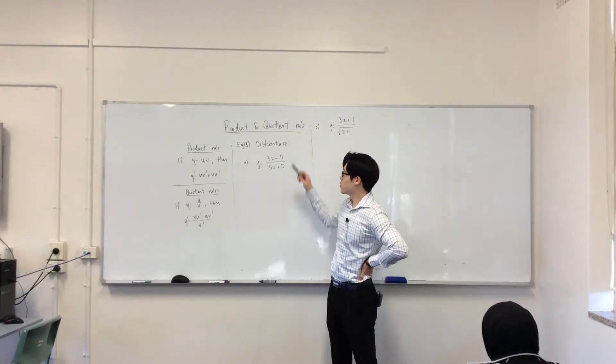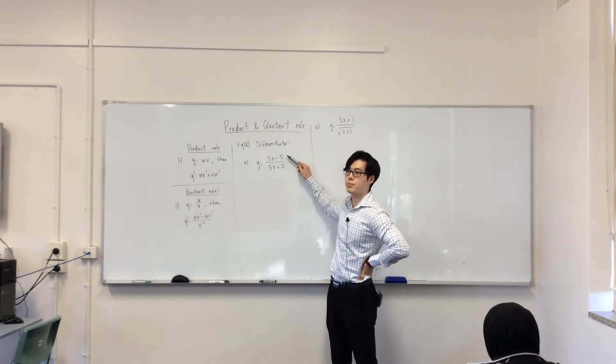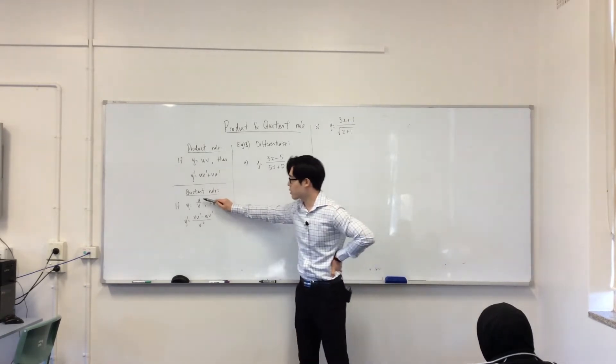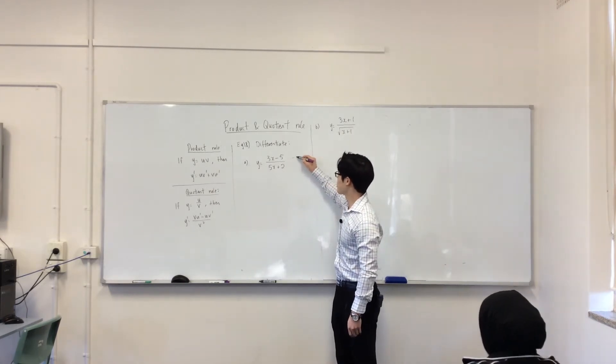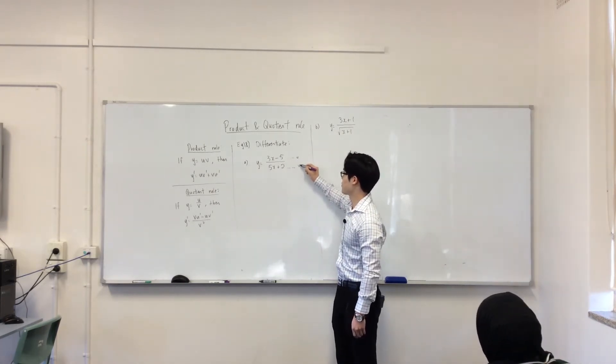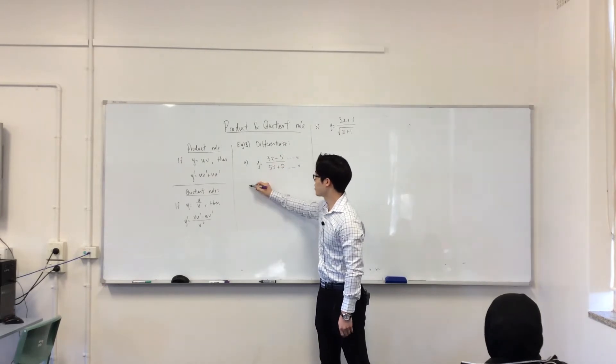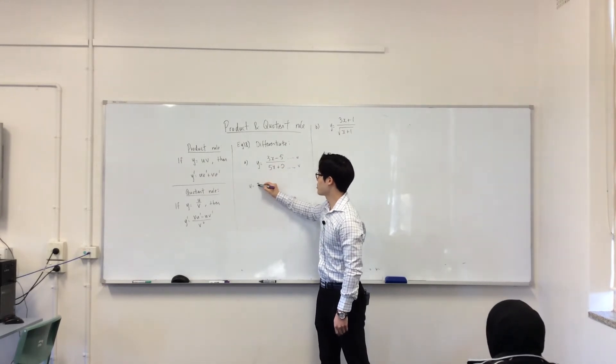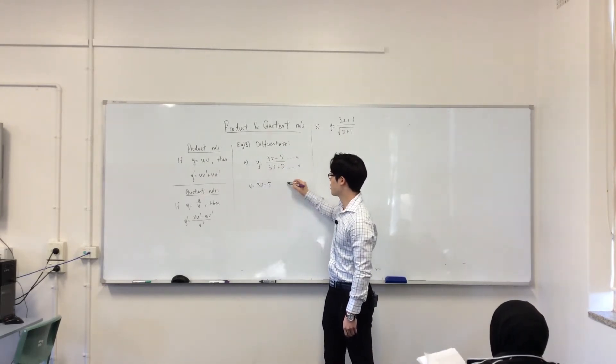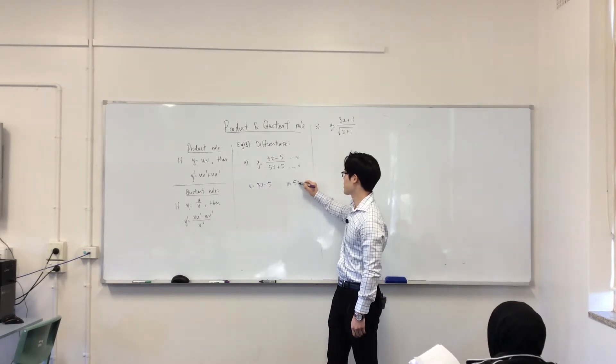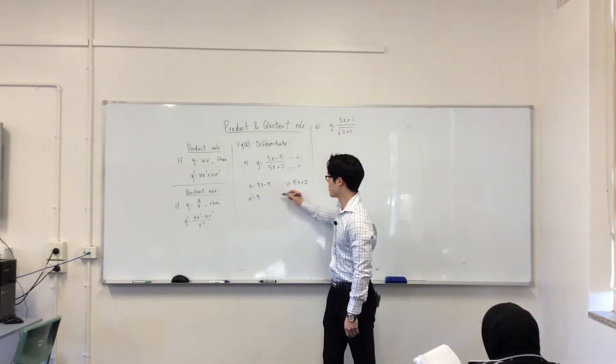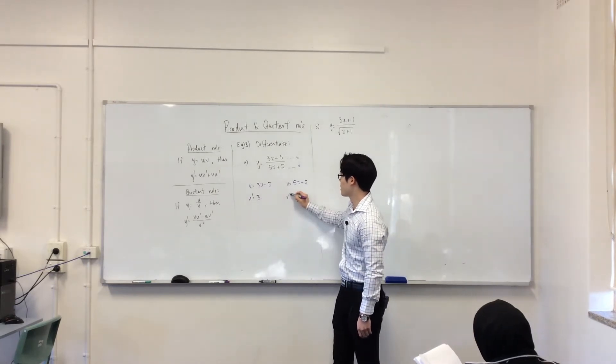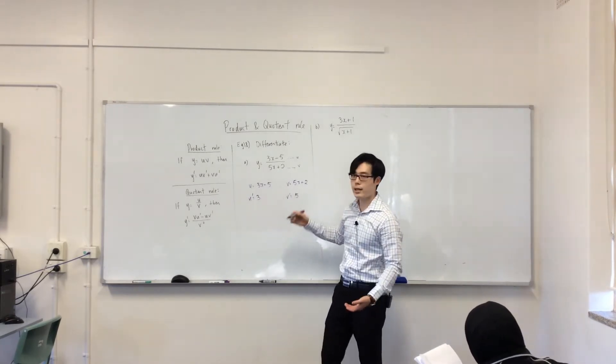Quotient rule. So, if you've got two expressions as a fraction, so if you've got two expressions as a fraction like that, this is your u, this is your v, the whole thing. So, let me write it out. So, u is 3x - 5, v is equal to 5x + 2. Same thing, u dash is 3, that's a dash, and v dash is 5. And let's just plug it in.